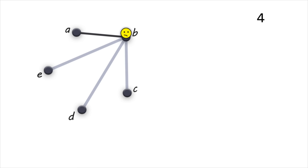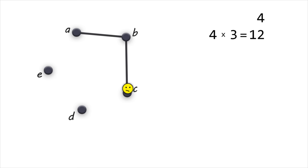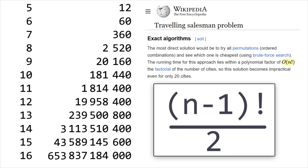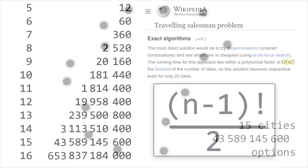The route options grow rapidly: 4×3 = 12, then 4×3×2 = 24, and so on. The number of options is the factorial of the number of cities minus one, where N is the number of cities. Since the problem is symmetrical and the route is closed, the result must be divided by two. The number of options increases rapidly with the number of cities, and for 66 cities or more the problem cannot be solved using brute force search.